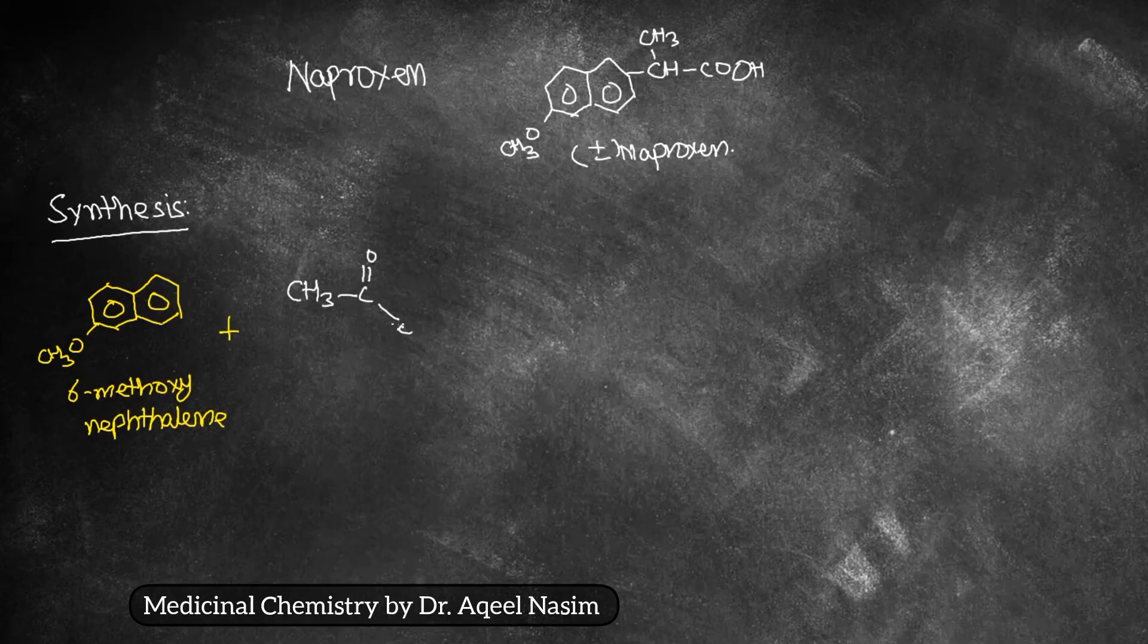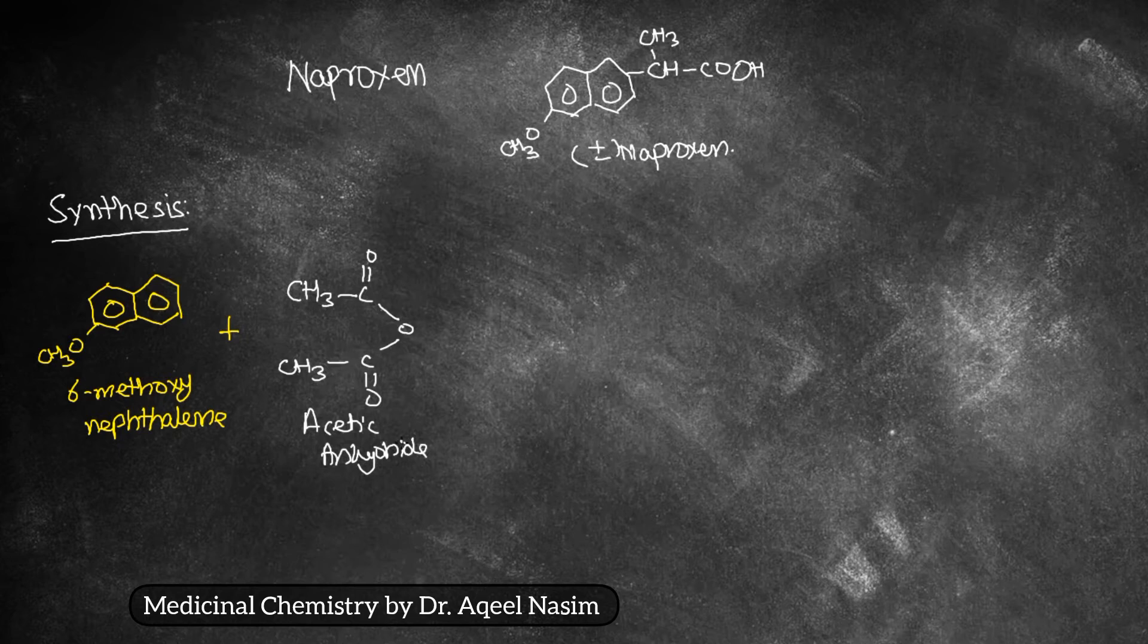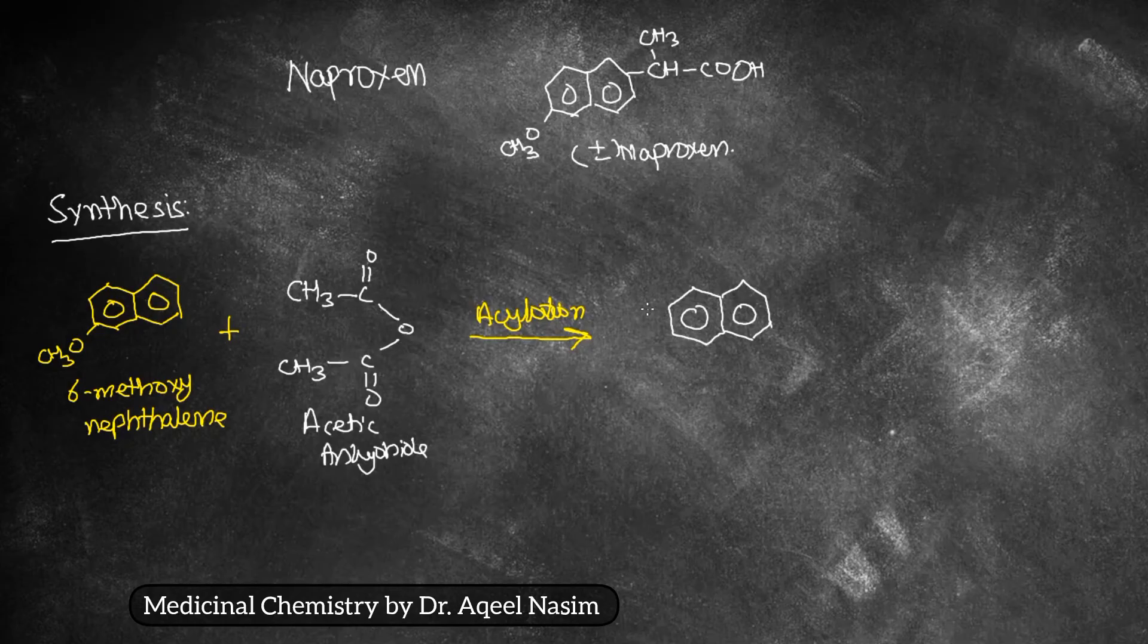The first step in the synthesis of naproxen: 6-methoxy naphthalene along with acetic anhydride undergoes acylation.